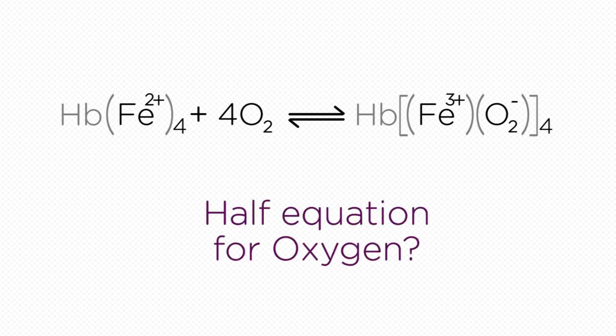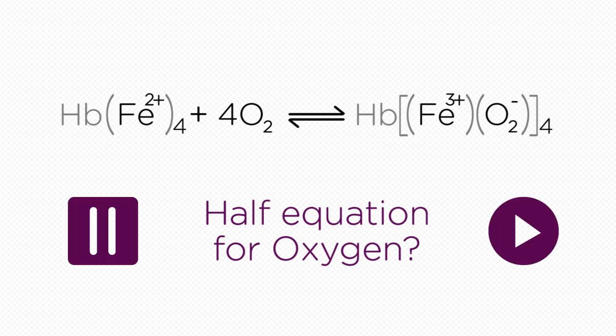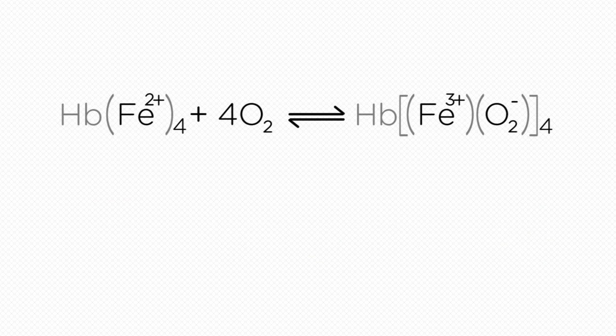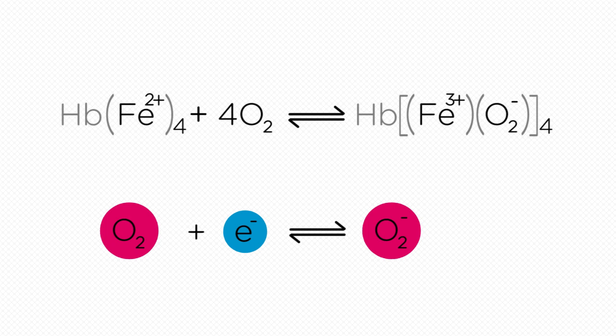Can you write the half equation for oxygen forming the superoxide? Pause the video for a moment and think. The answer is that oxygen remains bound to oxygen but undergoes reduction, gaining an electron from iron.